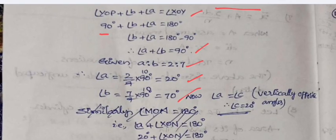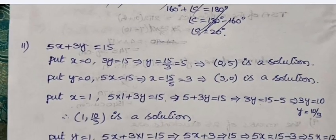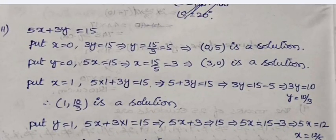Again, a and c are equal because these two are vertically opposite angles. So c = 20 degrees, which is equal to a. Next one: 5x + 3y = 15. Write any four solutions for this equation.